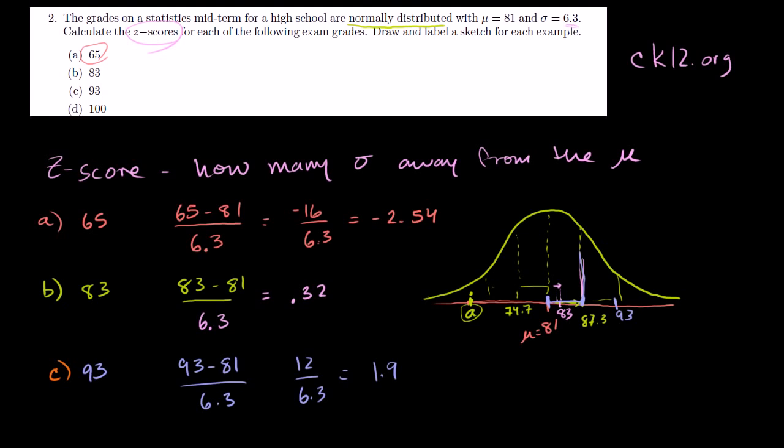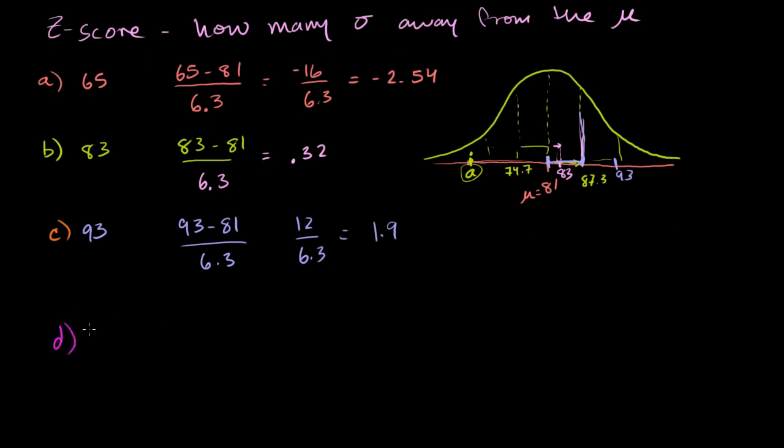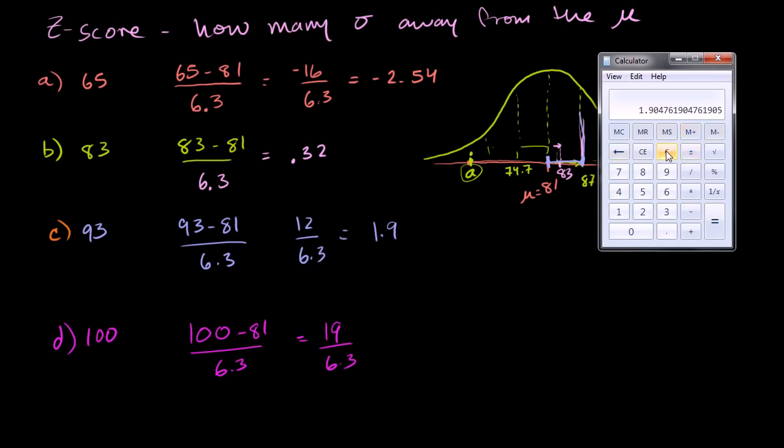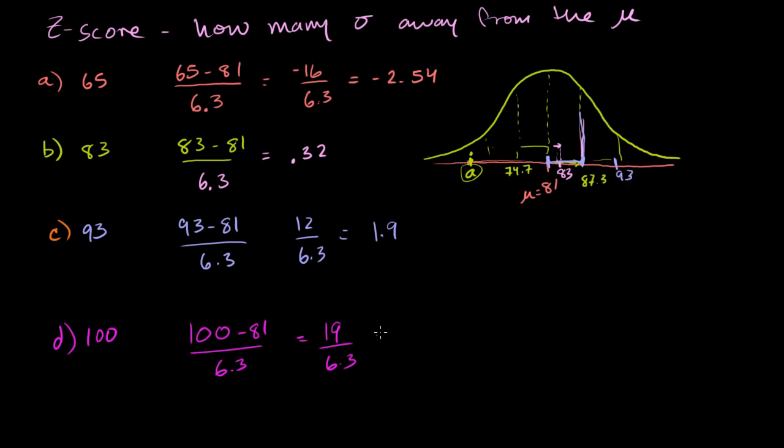Part D, a score of 100. We figure out how far is 100 above the mean. 100 minus 81 equals 19 over 6.3, so it's going to be a little over three standard deviations. 19 divided by 6.3 equals 3.02. So it's very close to 3.02. A grade of 100 is 3.02 standard deviations above the mean.